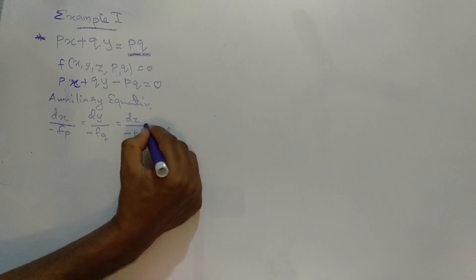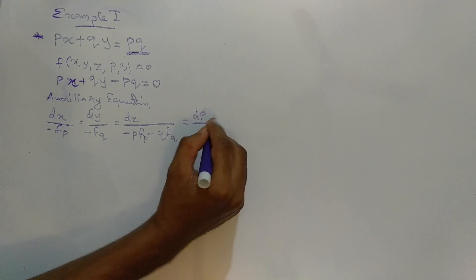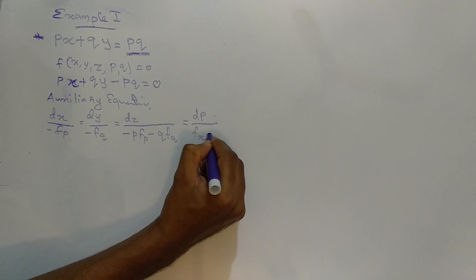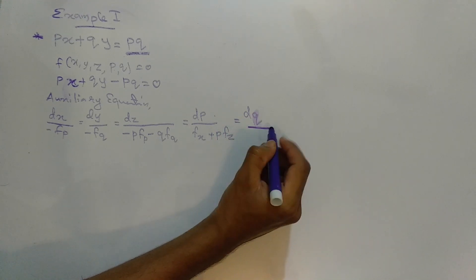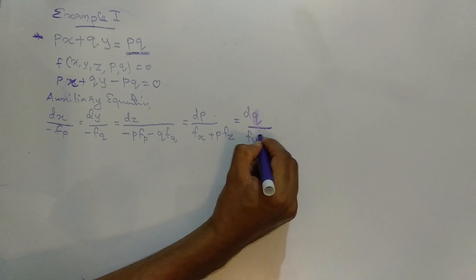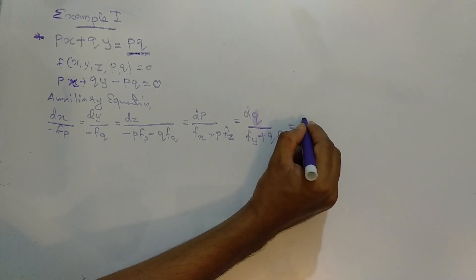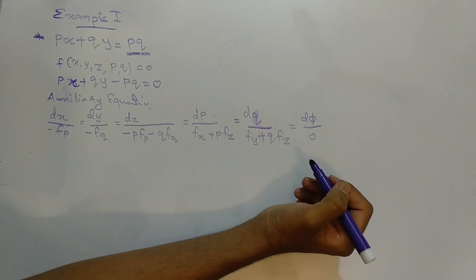The auxiliary equation is: dx divided by minus fp equal to dy divided by minus fq, which is equal to dz divided by minus p·fp minus q·fq, which is equal to dp divided by fx plus p·fz, equal to dq divided by fy plus q·fz, equal to d-phi divided by 0.